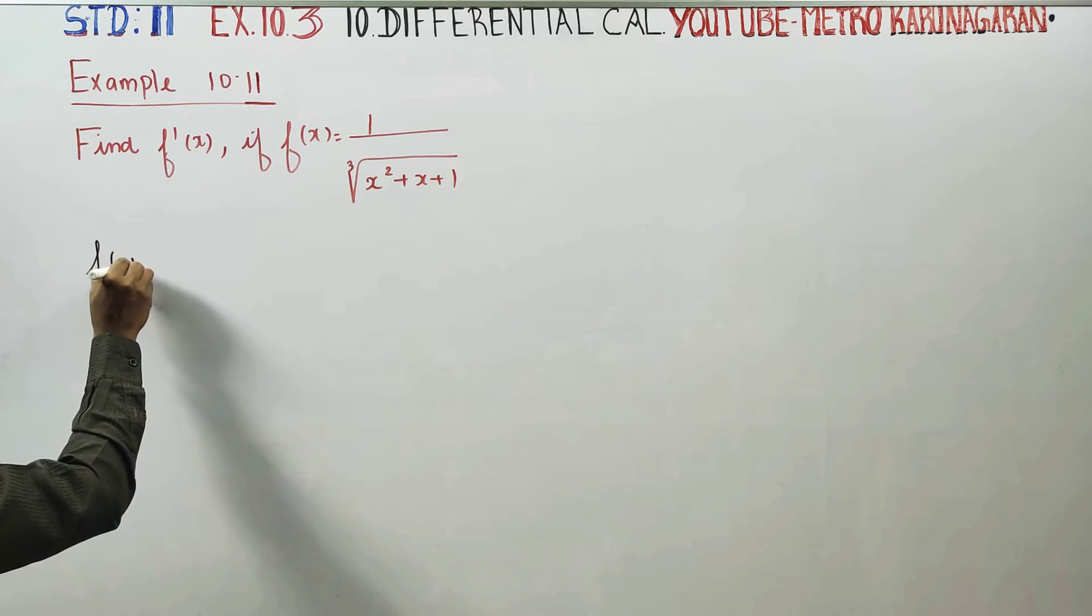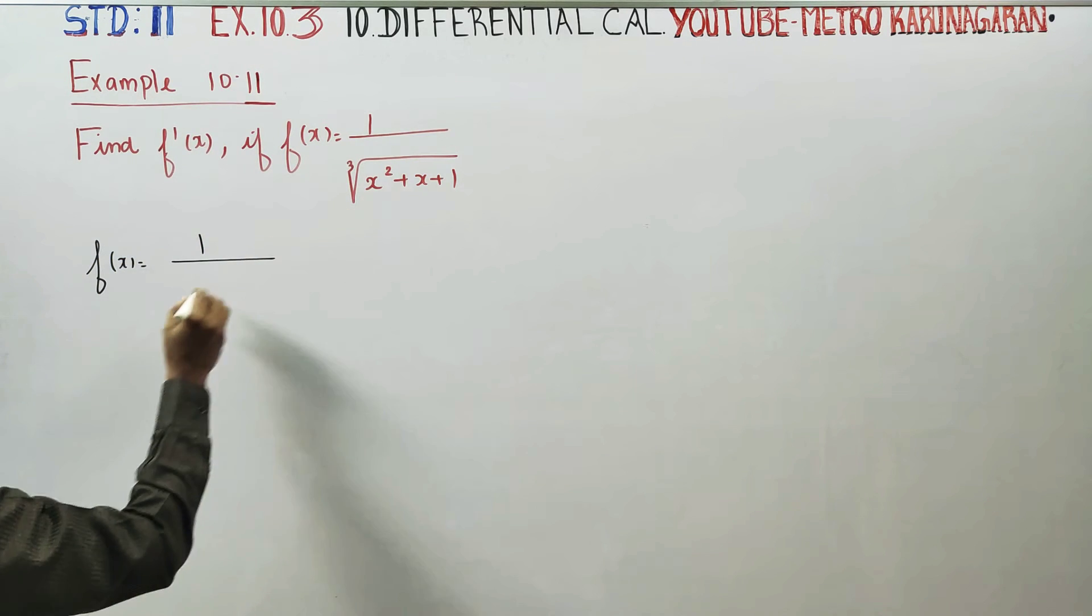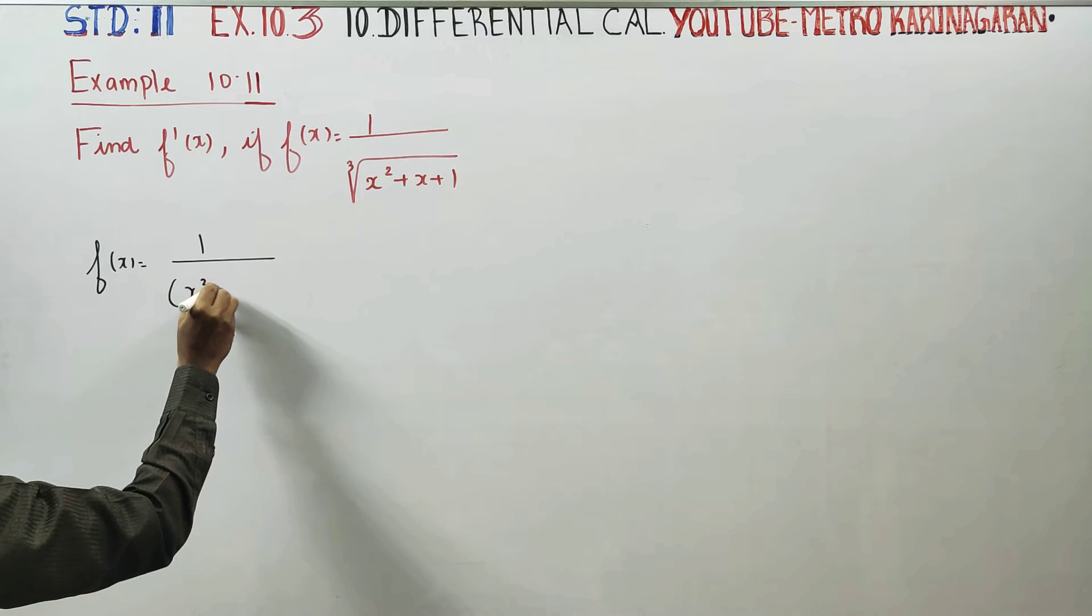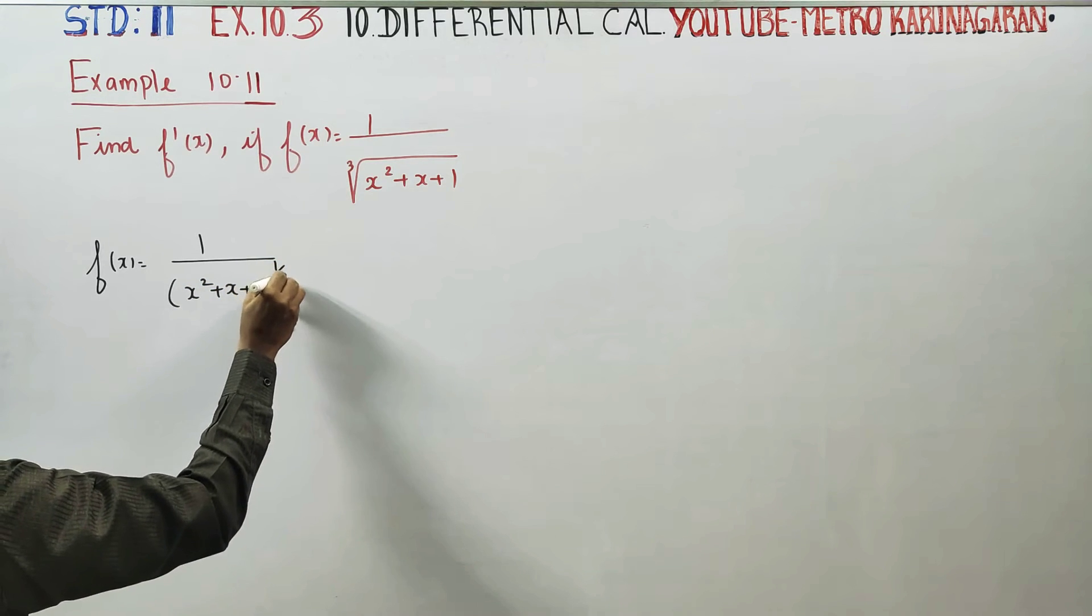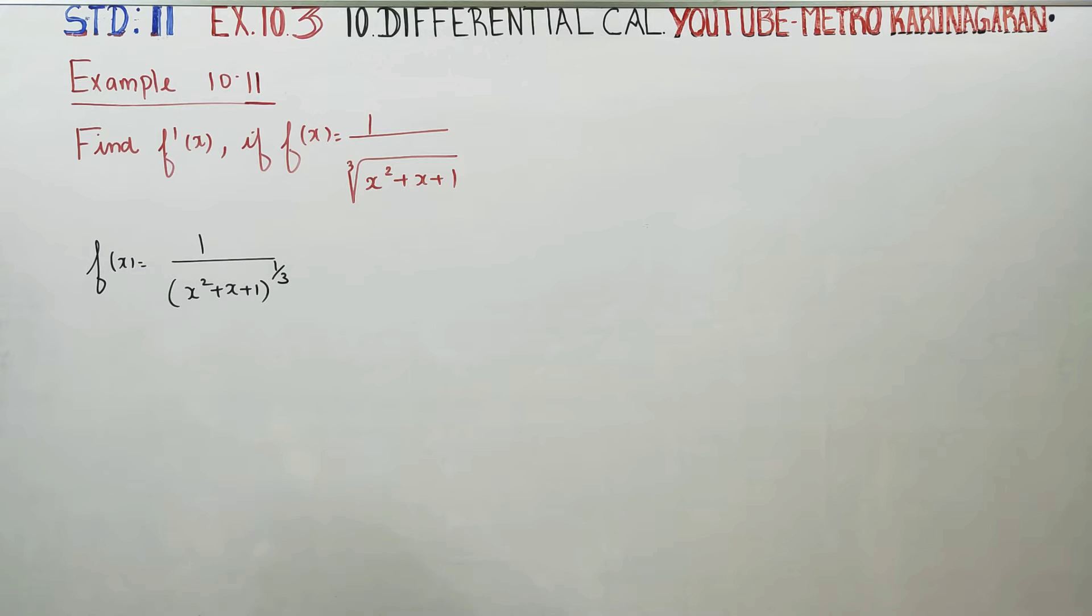First stage, f of x is equal to x square plus x plus 1 whole power 1 by 3, cube root, whole power 1 by 3.